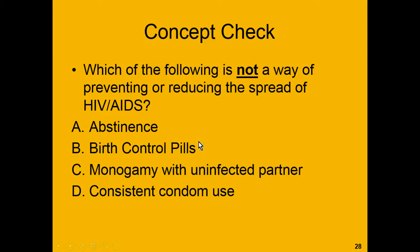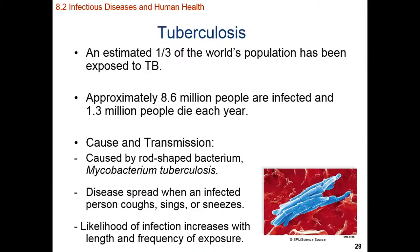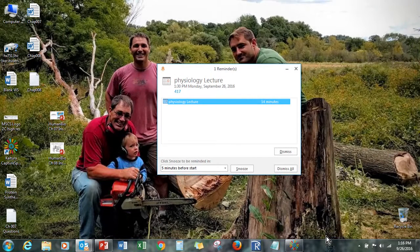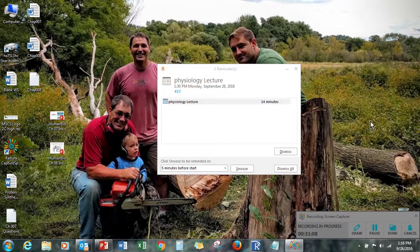The correct answer to this question is B, birth control pills. If someone is taking birth control pills, it offers zero protection against contracting HIV-AIDS from sexual intercourse. Not having sex is a great way to avoid getting this sexually based disease. Or if you only have sex with somebody who doesn't have the disease and is only having sex with you, you can avoid getting the disease. Or if you consistently use a condom, you can also reduce the chances of contracting the disease. And that's all we have for this recording — we'll pick up with tuberculosis in our next recording. If you have any questions, please post them on the class discussion board or shoot me an email or swing by my office. Happy studies!